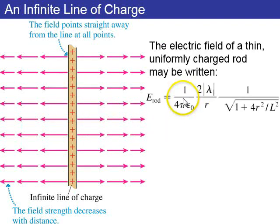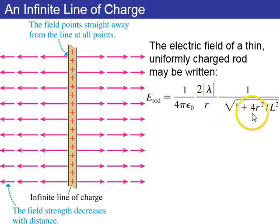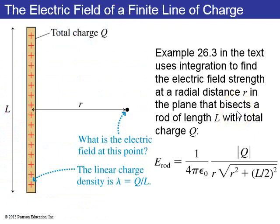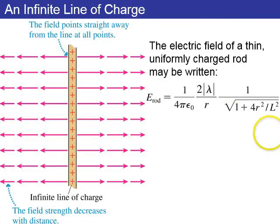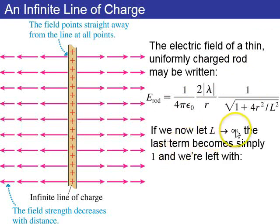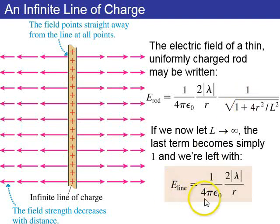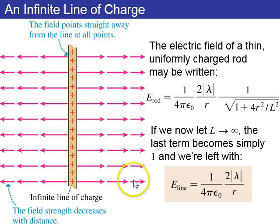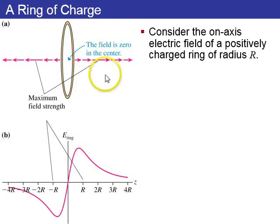Using the same equation but writing lambda in place of Q over L, and taking L to infinity, the term 4r squared over L squared goes to zero, so the square root factor becomes one. The electric field of an infinite line charge is E equals 2 lambda over r times Coulomb's constant — it decreases linearly with distance.